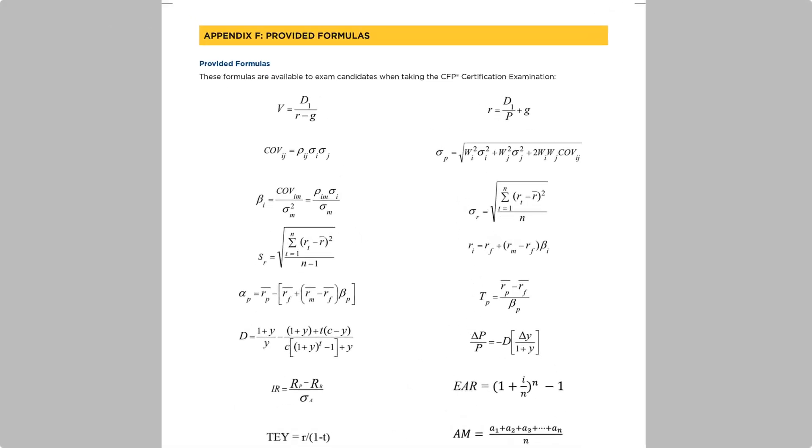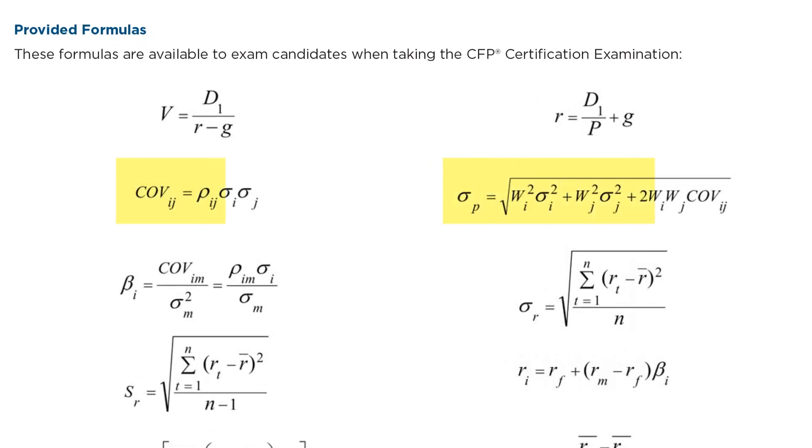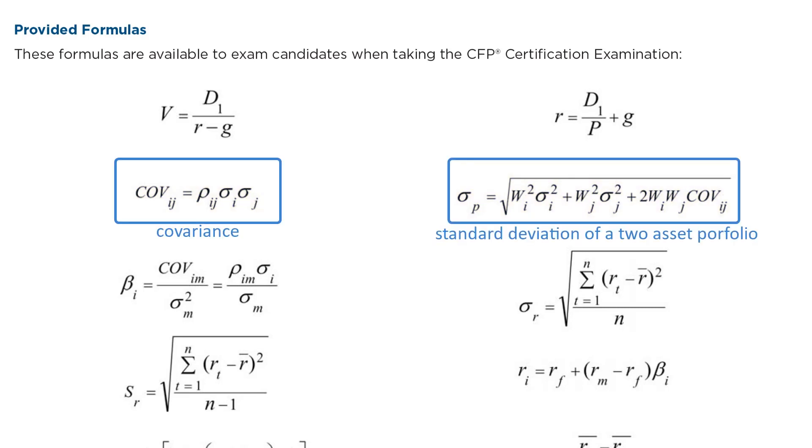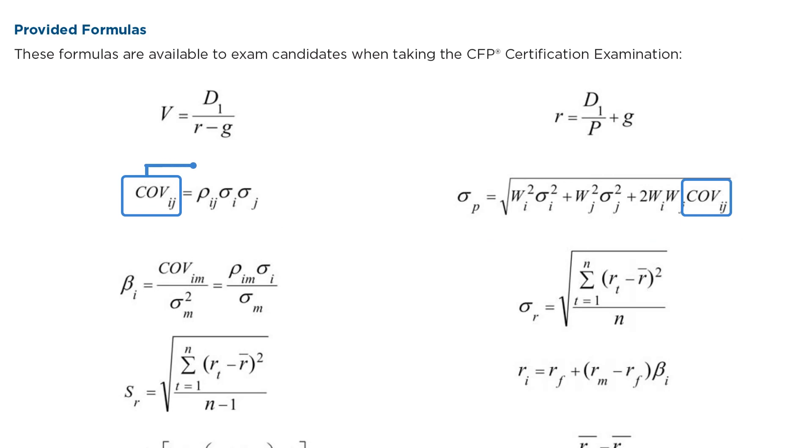There are two formulas you will be expected to know for the CFP exam. This one is for calculating covariance, and this one calculates the standard deviation of a two-asset portfolio. You will observe that the formula for standard deviation uses covariance.